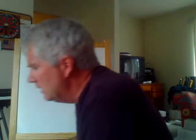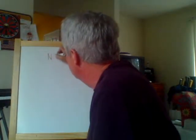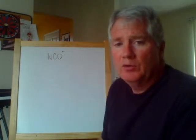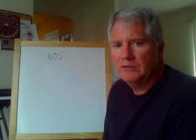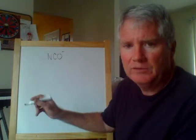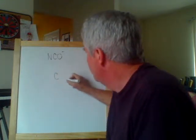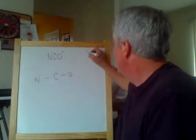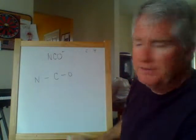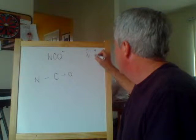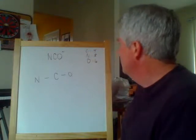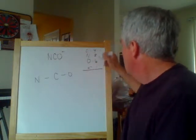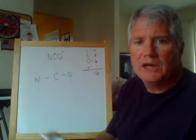I'm going to do two examples in this video that illustrate formal charge in action. I'll start with an ion called cyanate. Cyanate has the formula NCO and it has a single minus charge — it's an anion. What we want to do is start with the least electronegative atom and put that in the middle. In this case, the least electronegative one is carbon, so we'll put carbon in the middle and attach the oxygen and nitrogen to it. We have four valence electrons for carbon, five for nitrogen, and six for oxygen. Don't forget it's an anion, so we have an additional one for the extra electron, adding up to 16 electrons total.